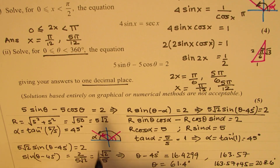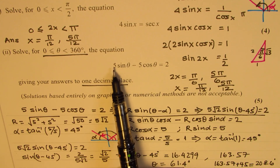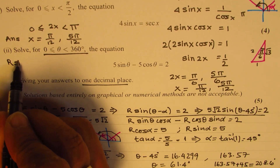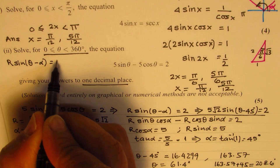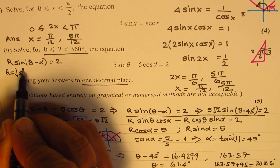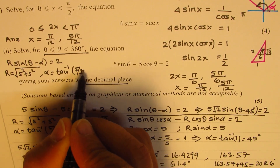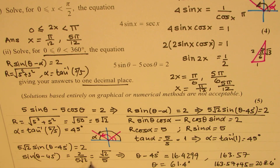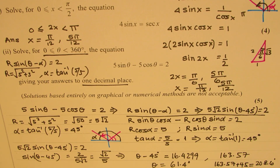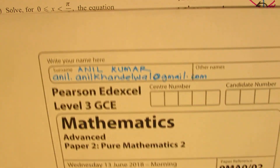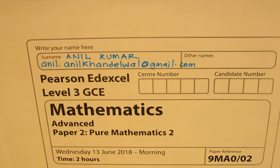I hope the steps are clear — it's quite straightforward. Once you write the equation in the form R sin(θ − α) equals 2, where R equals √(5² + 5²) and α equals tan⁻¹(5/5), you get both values and solve. I'll provide links on the wave equation for practice. For any questions, feel free to write to the email address given here. Thanks for your time and all the best.